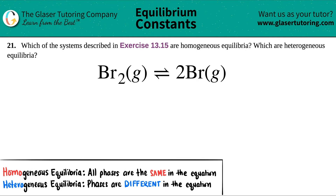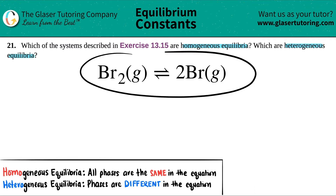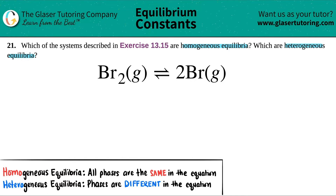Number 21. Which of the systems described in exercise 13.15 are homogeneous equilibria and which are heterogeneous equilibria? I pulled up one of the balanced equations in that exercise. In this case, we have to find out whether Br2 gas, which comes to equilibrium with 2 Br gas, is either a homogeneous equilibrium or heterogeneous equilibrium.